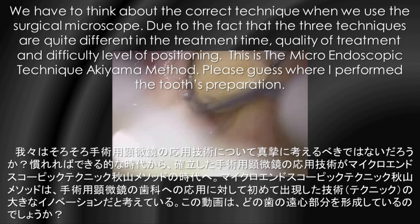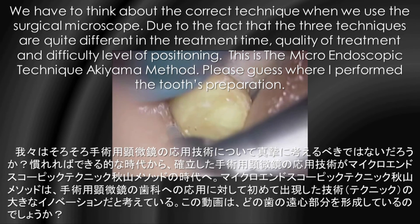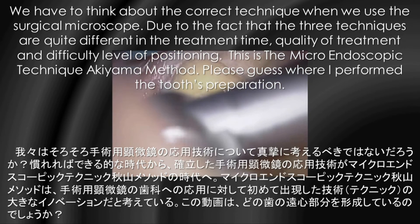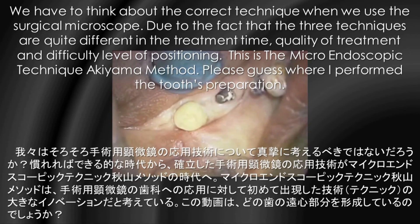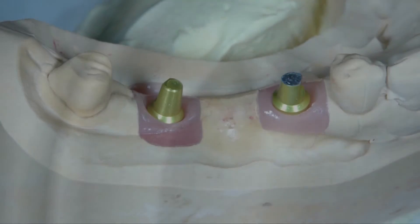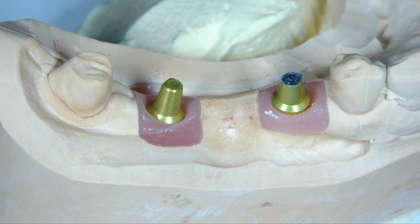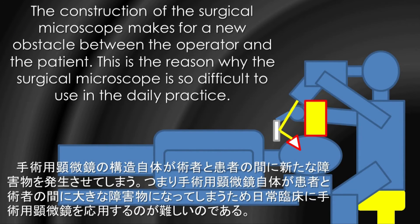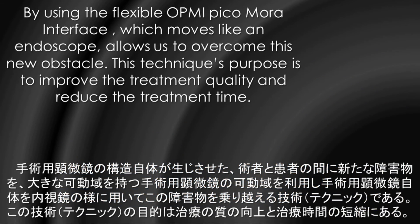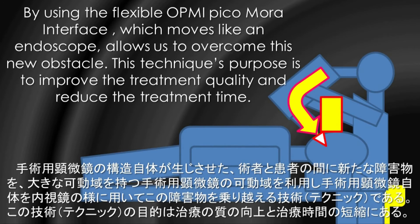This is the micro-endoscopic technique, Akiyama method — please guess where I perform the tooth preparation. Here: right lower wisdom tooth, distal side. The construction of the surgical microscope makes for a new obstacle between the operator and the patient; this is the reason why the surgical microscope is so difficult to use in daily practice. By using the flexible OPMI-PICO molar interface, which moves like an endoscope, we can overcome this new obstacle. This technique's purpose is to improve the treatment quality and reduce the treatment time.